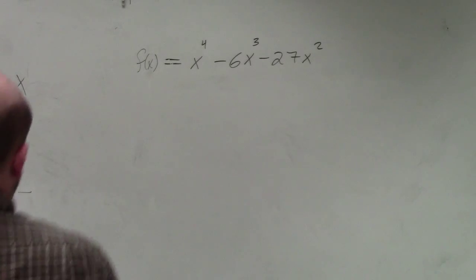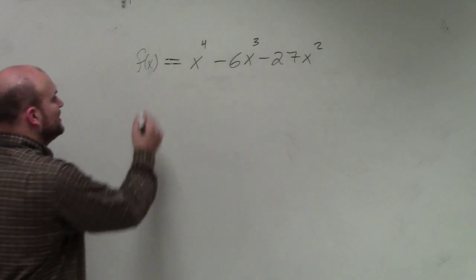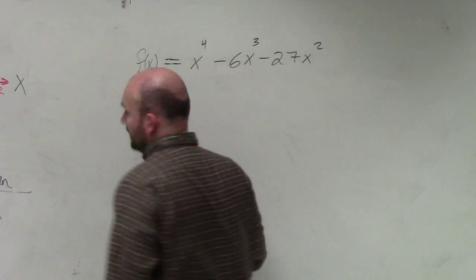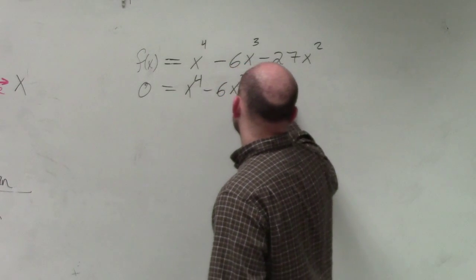Let's do a reminder. So first thing we're solving for this, first thing we want to do is replace our f(x) with 0. Then we have x to the 4th minus 6x cubed minus 24x squared.